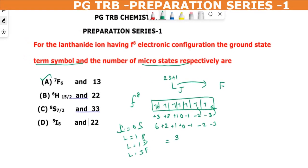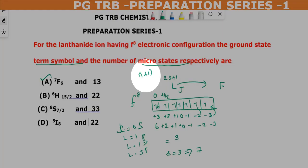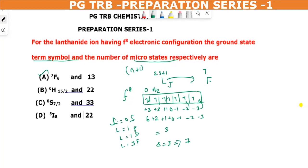Then spin multiplicity equals 2S plus 1. So spin values add. In the spin value is 0, in the spin value is plus half. So five, six, total is 3. S value is 3. 2S plus 1 is 7. This is spin multiplicity.